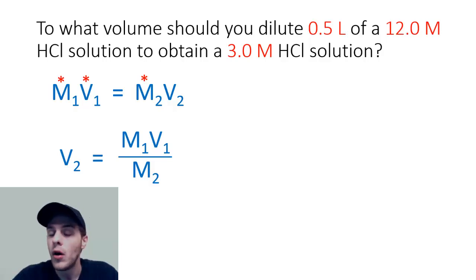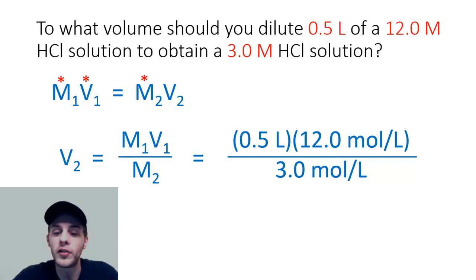At this point we have solved for V2. All we need to do is just plug those numbers in. So it's going to be that 0.5 liters times 12.0 moles per liter - remember molarity just means moles per liter - and then that whole product is going to be divided by 3.0 moles per liter.